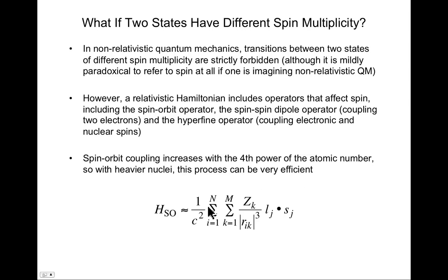The coupling increases with the fourth power of the atomic number. The operator is divided by 1/c², where c is the speed of light — a very large number — which is why we need a very large value of Z, meaning heavy nuclei. This is known as the heavy atom effect: you can cause spin states to undergo inter-system crossing when you have heavy atoms around.